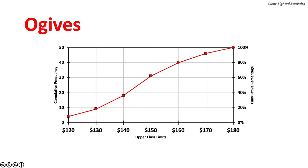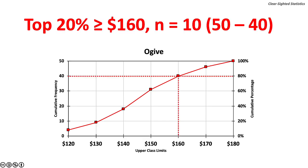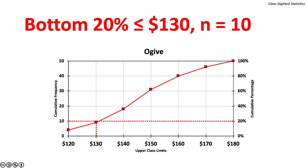Ogives are extremely powerful communication devices because they provide information on how the data build through the distribution. Here is an ogive drawn on the frequency distribution presented earlier. The top 20% of data has expense reports equal to or greater than $160 — there are 10 such reports, found by 50 minus 40. The bottom 20% of expense reports represents expenditures of $130 or less, and also includes 10 such reports.